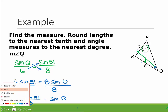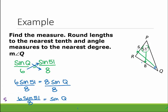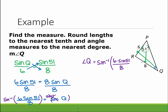Now remember, in order to find an angle measure, we have to take the inverse sine. So take the inverse sine of both sides — those cancel, and we're left with angle Q. What I'm going to type in the calculator is the inverse sine of 6 times the sine of 51, close the parentheses, divided by 8. Remember to close your parentheses as you go. That gives us 35.65 degrees, and because it says round to the nearest degree, we call it 36 degrees.